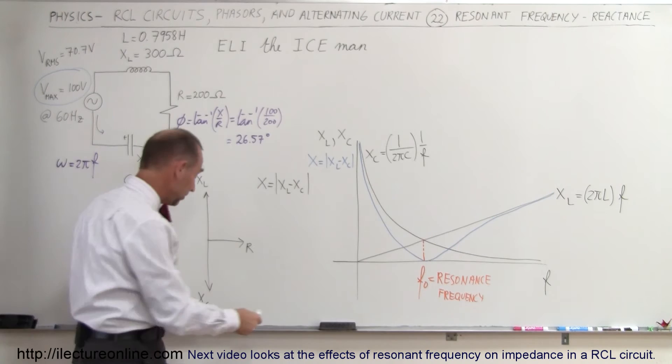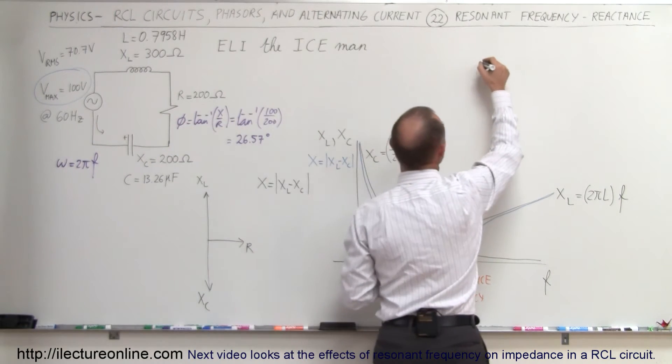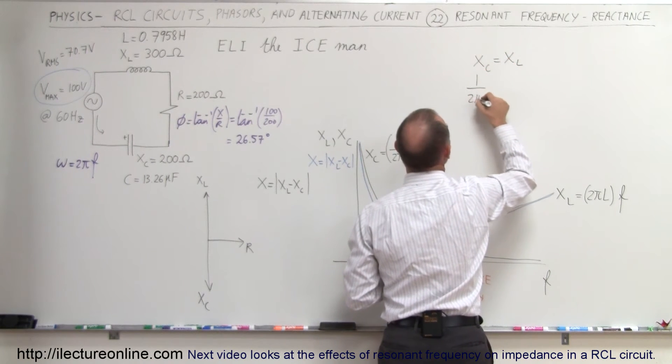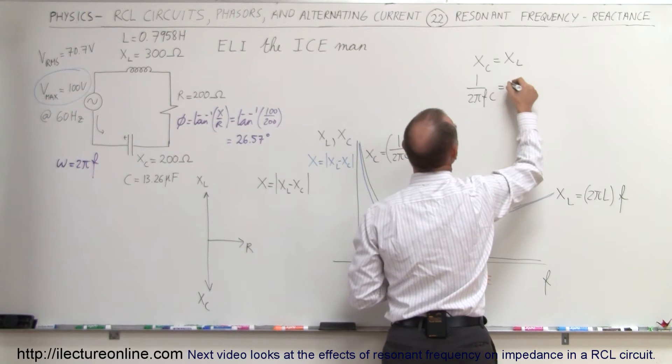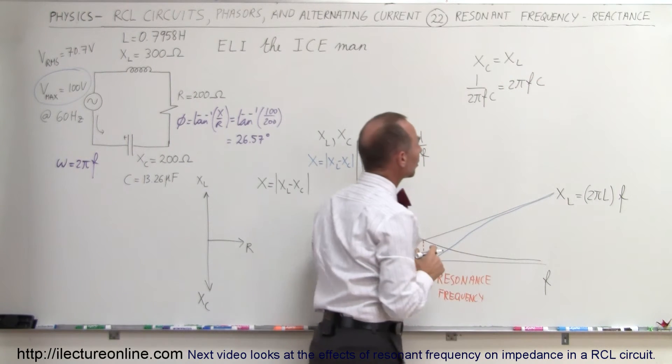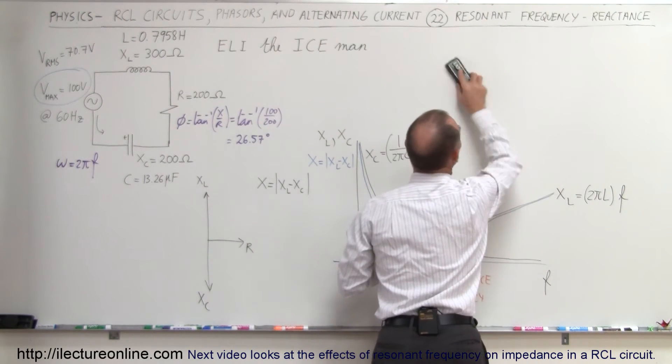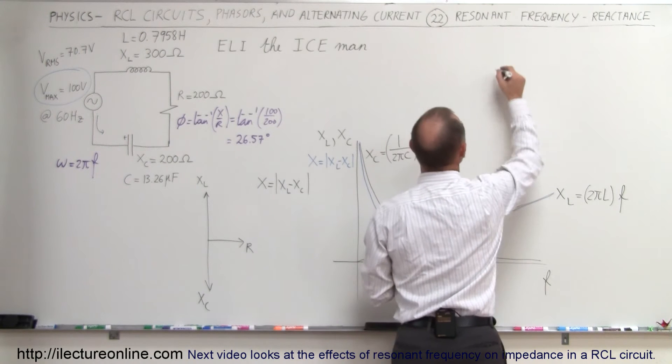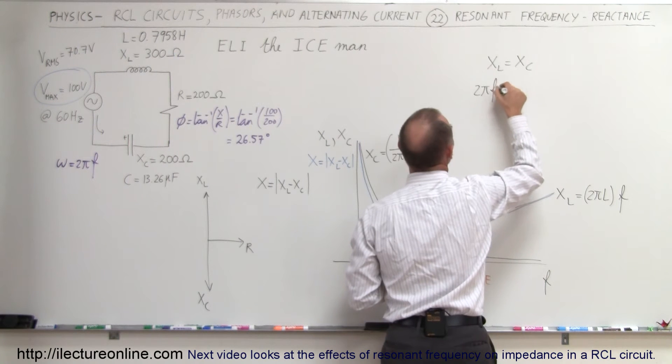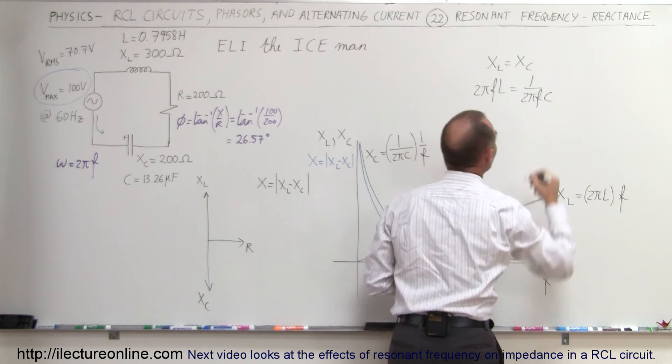Well, how do we find that resonance frequency? We can set X sub C equal to X sub L, so we have 1 over 2πfC equals 2πfL. Actually, I'm going to reverse the two. I'm going to write it as X sub L equals X sub C, so we end up with 2πfL equals 1 over 2πfC. So we have to solve that for f.